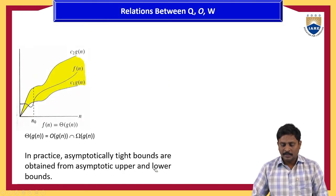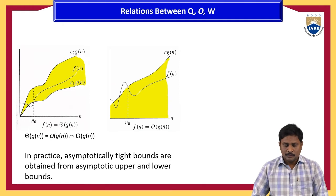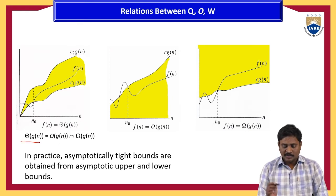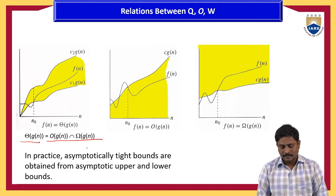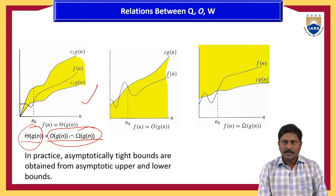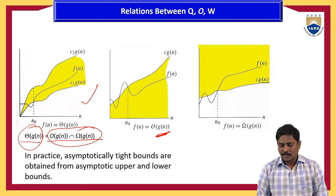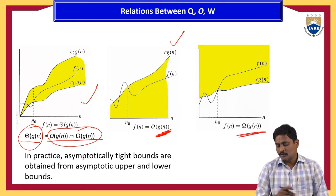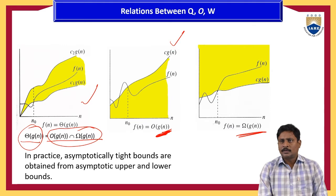The relation between theta, omega, and big O: Θ(g(n)) = O(g(n)) ∩ Ω(g(n)). In theta, f(n) lies between c₁·g(n) and c₂·g(n). In big O, c·g(n) is always ≥ f(n). In omega, c·g(n) is always ≤ f(n). Asymptotically tight bounds are obtained from asymptotic upper and lower bounds.